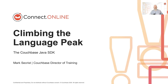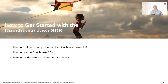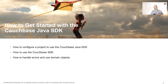In this particular session, we're going to focus on getting started with the Couchbase Java SDK. Specifically, we'll focus on how to configure your project and set it up so your Java project can make use of the Couchbase Java SDK. We'll talk about how to use the SDK — how to get connected to the database, how to perform key-value operations, and then we'll conclude with a discussion of how to handle errors and discuss domain objects and how to translate between Couchbase documents and domain objects using serialization and deserialization techniques.